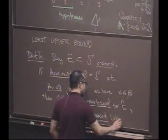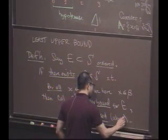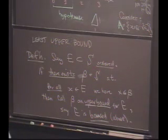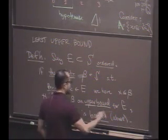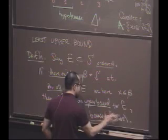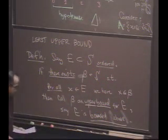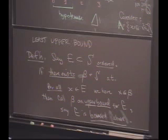Call it an upper bound for E. And we'll say E is bounded. If it's unclear what you mean by bounded, we'll say bounded above. Usually you want to be both bounded above and bounded below to be bounded. So maybe I'll just make sure we're explicit and we'll say it's bounded above.